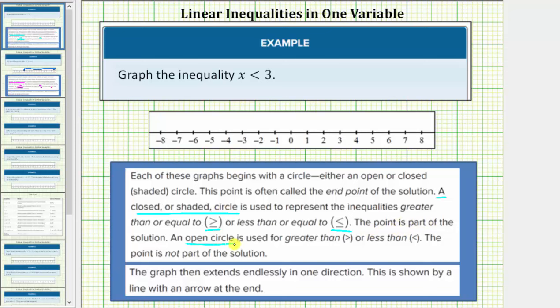An open circular point is used for greater than or less than. The reason the circular point is open is because the point is not part of the solution. The graph then extends endlessly in one direction based upon the inequality, and this is shown by a line with an arrow at the end.